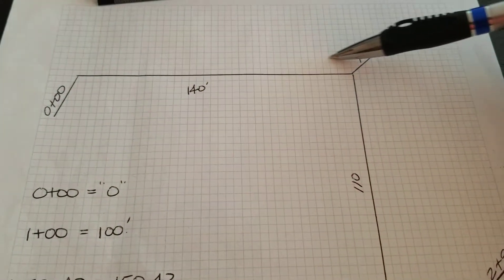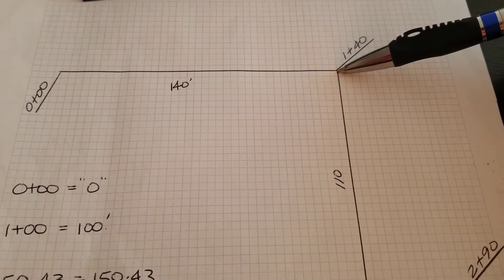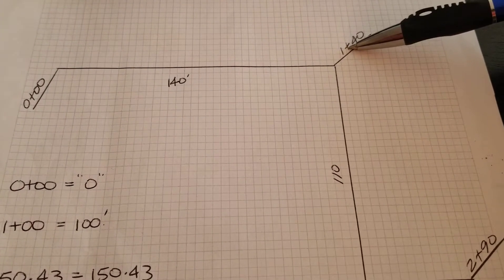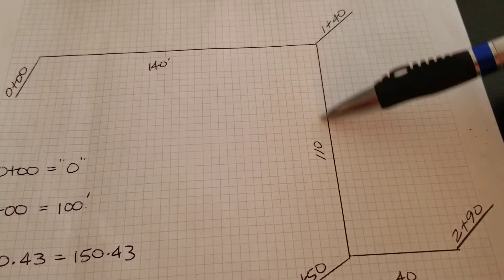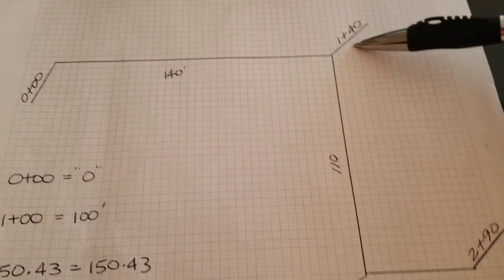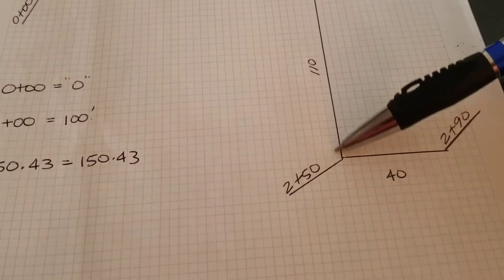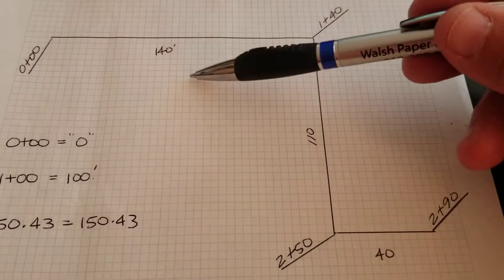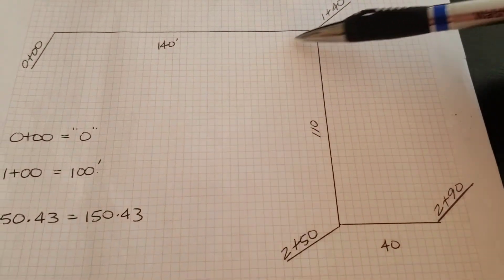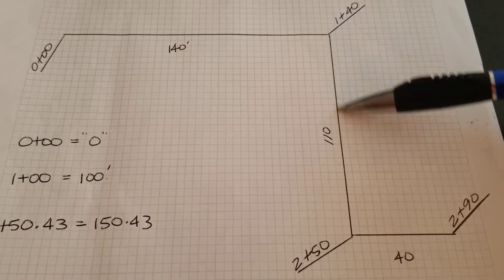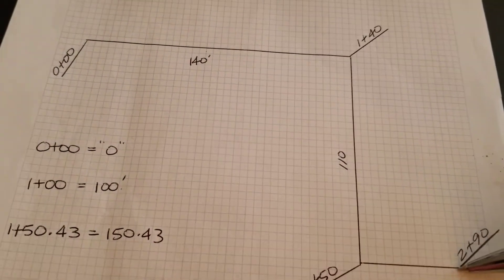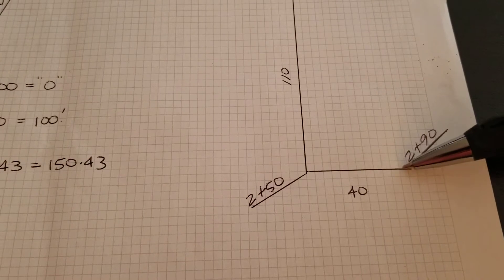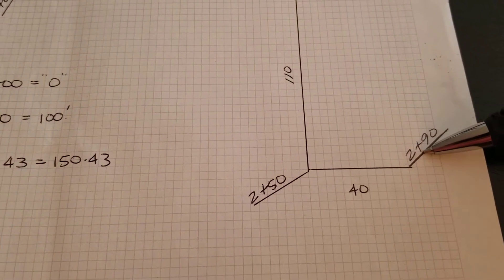And this distance was 140 feet, it'd be 1+40 at the angle point. Then we would add 110 feet to this station, which would make it 2+50, because 110 plus 140 is 250 feet. So it just shows you where you are on that line. And let's say in 40 feet that it ended, that would make this station 2+90.